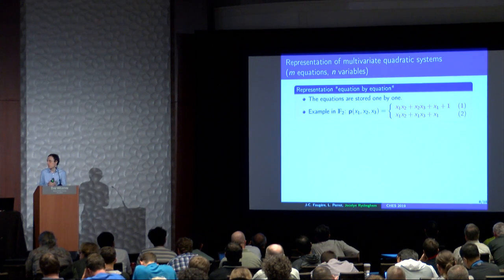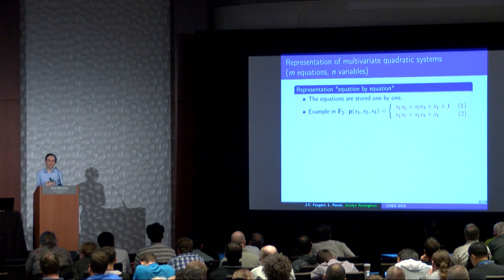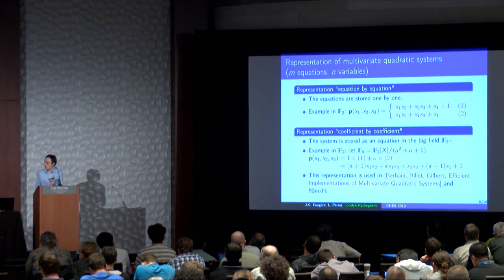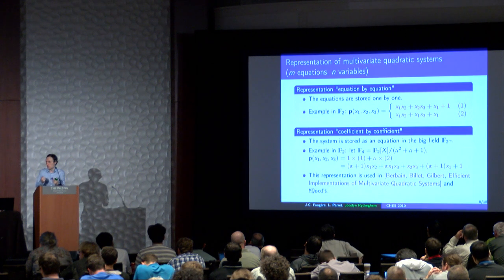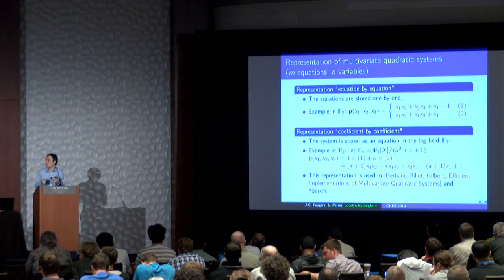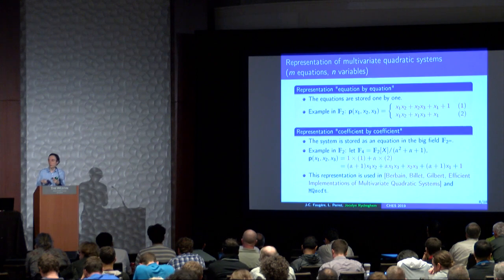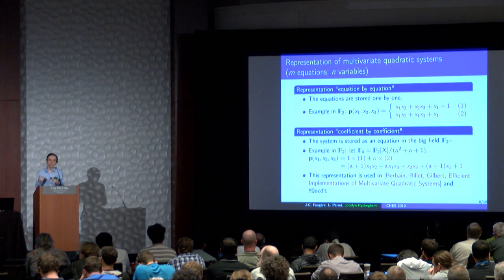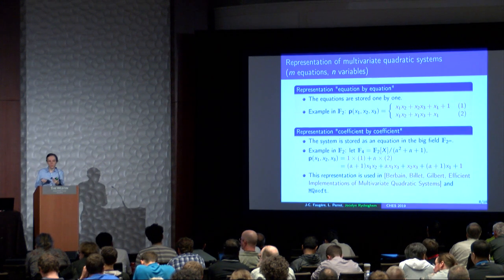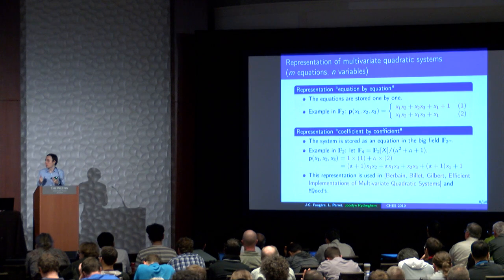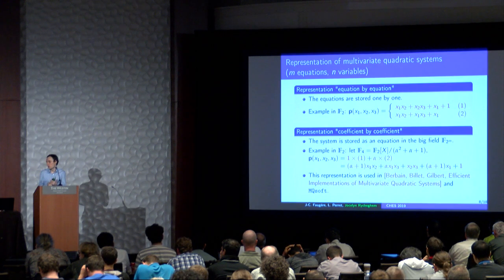For the verifying process, we need efficient evaluation of a multivariate quadratic system, so we need an efficient representation. We can use the equation-by-equation representation: for each equation, we set a monomial order and store coefficients one by one, but it is not efficient over GF(2). The most efficient representation is coefficient-by-coefficient, or monomial representation. The idea is to pack the coefficients of each equation for one monomial. We can represent this as one equation in a big field. For example with two equations — a red equation and a blue equation — if we create the extension GF(4), multiply the red equation by 1 and the blue equation by alpha, and sum them, we obtain just one equation in the big field. This organization was already used in 2006 and today we continue to use it in MQSoft.